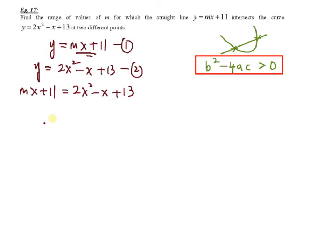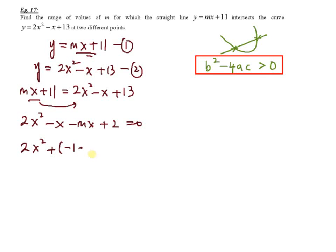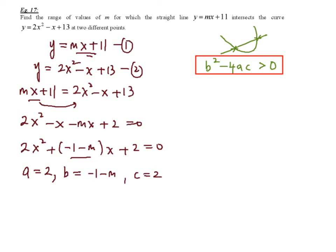Arrange into general form. You get 2x squared minus x, then bring the mx term over to get 2x squared minus 1 minus m times x plus 2 equals 0. So a equals 2, b equals negative 1 minus m, and c equals 2. Substitute into b squared minus 4ac greater than 0: you have negative 1 minus m, all squared, minus 4 times 2 times 2, greater than 0.